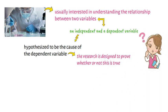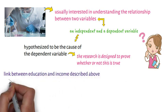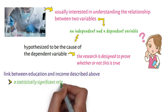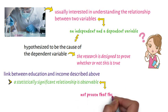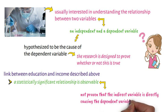In many cases, like the link between education and income described above, a statistically significant relationship is observable, but it is not proven that the indirect variable is directly causing the dependent variable to behave as it does.